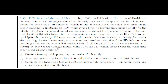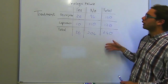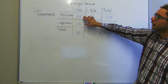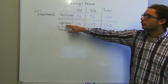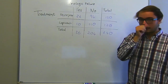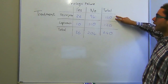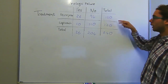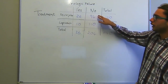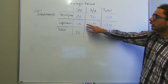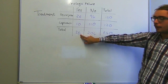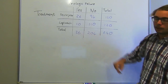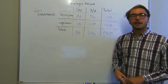Question A says: create a two-way table presenting the results of the study. So here we've drawn the table. We know 26 people used Nevirapine and had virologic failure, and 10 used Lopinavir and had virologic failure. The study was split 120-120. So we calculate 120 minus 26 to get 94, 120 minus 10 to get 110, then total to get 36, and 240 minus 36 to get 204. That's how we draw the table.